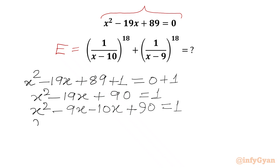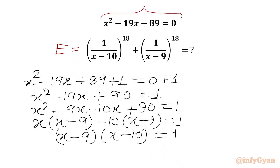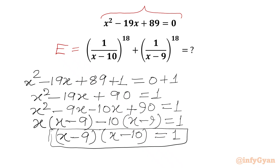From the first two terms we can take x common, giving x(x minus 9). From the last two terms we take minus 10 common, giving minus 10(x minus 9), so the factorization is (x minus 9)(x minus 10) equal to 1. From this equation we can conclude x cannot be equal to 9, and x cannot be equal to 10 either.